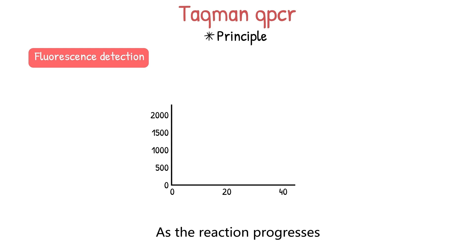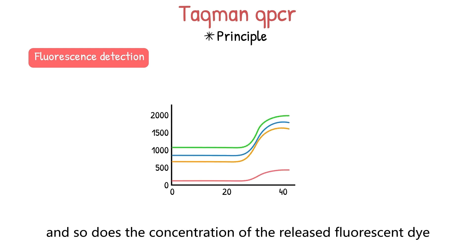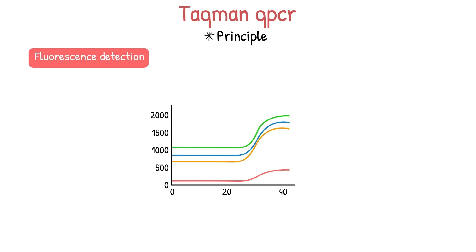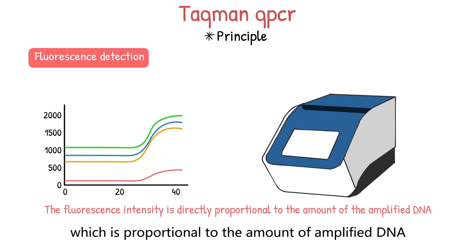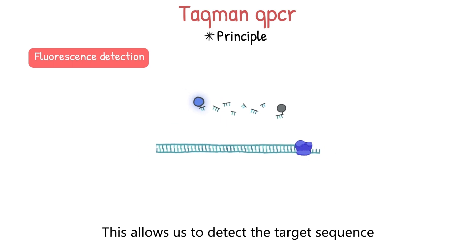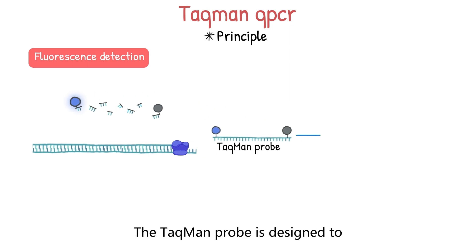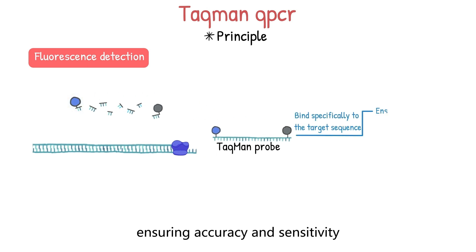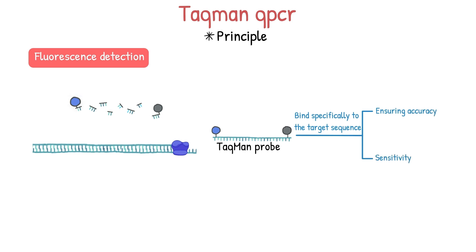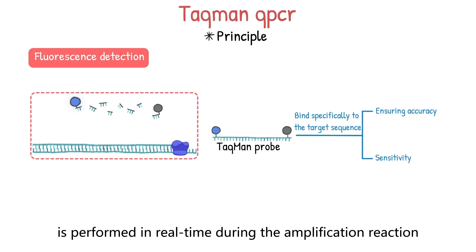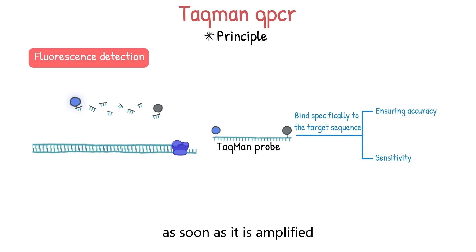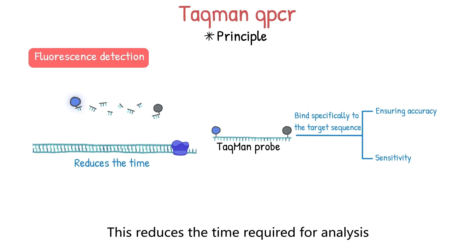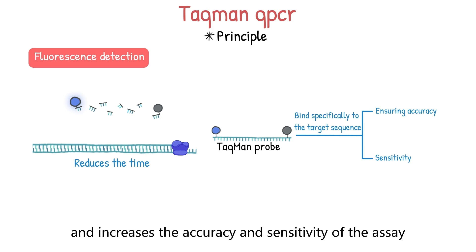As the reaction progresses, the amount of amplified DNA increases and so does the concentration of released fluorescent dye. A specialized detector then measures the fluorescent intensity at the end of each cycle, which is proportional to the amount of amplified DNA. This allows us to detect the target sequence and quantify the initial template concentration. The TaqMan probe is designed to bind specifically to the target sequence, ensuring accuracy and sensitivity. The fluorescence detection step is performed in real-time during the amplification reaction, allowing for the target sequence to be detected as soon as it is amplified. This reduces the time required for analysis and increases the accuracy and sensitivity of the assay.